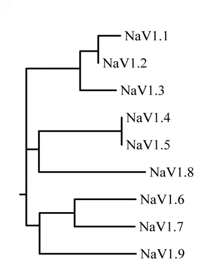The pore of sodium channels contains a selectivity filter made of negatively charged amino acid residues, which attract the positive Na+ ion and keep out negatively charged ions such as chloride. The cations flow into a more constricted part of the pore that is 0.3 by 0.5 nanometers wide — just large enough to allow a single Na+ ion with an associated water molecule to pass through. The larger K+ ion cannot fit through this area, and ions of different sizes also cannot interact as well with the negatively charged glutamic acid residues that line the pore.